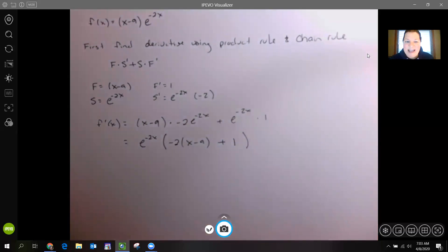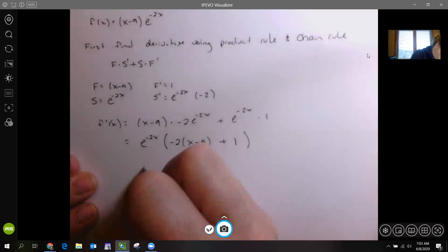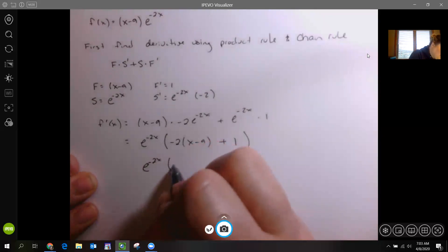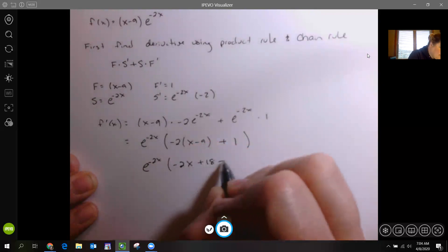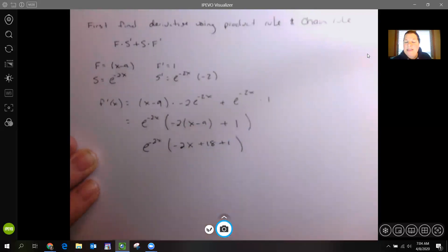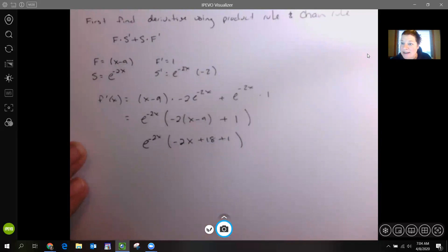I took that e to the negative 2x out. Why would I take that out? Because it can't equal 0. So it can't be part of our critical value. When we go from here, we need to simplify over here a little more. This is going to be negative 2x plus 18 plus 1, so then that 18 and that 1 can become a 19.